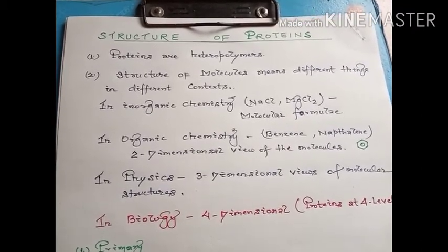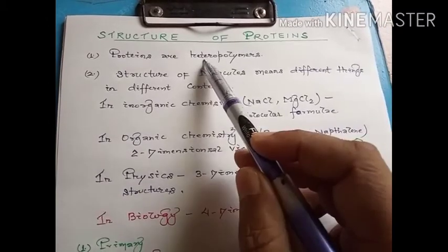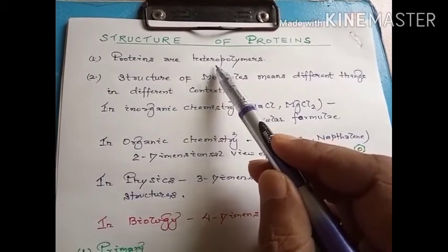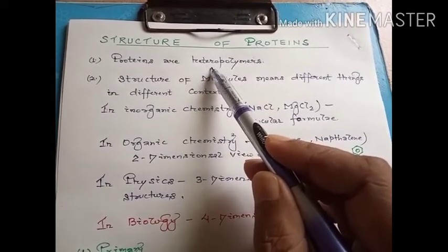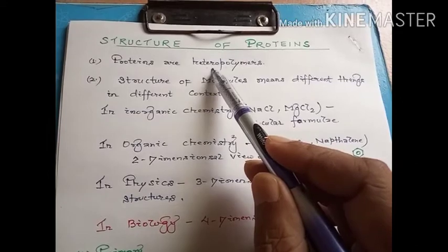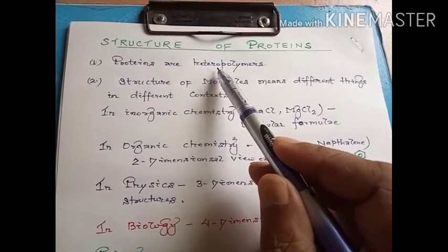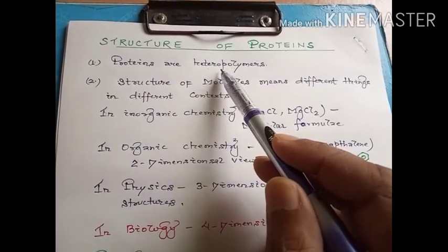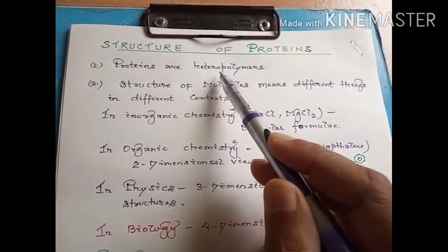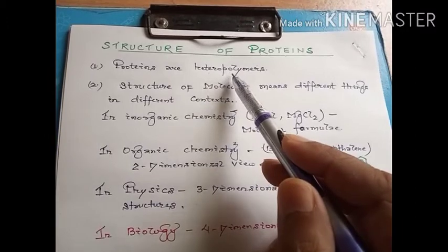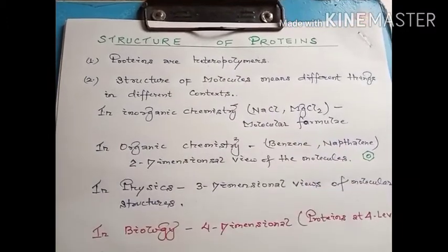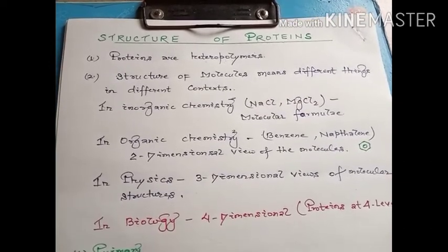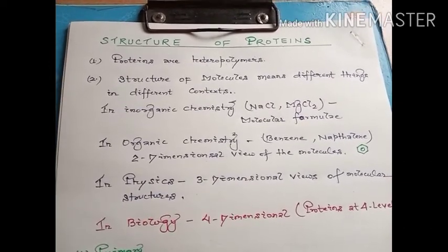We also discussed that proteins are heteropolymers, meaning they are made up of more than one type of amino acid — the monomers present within the polypeptide chain are of different types. The term 'structure' of a molecule means differently in different contexts.